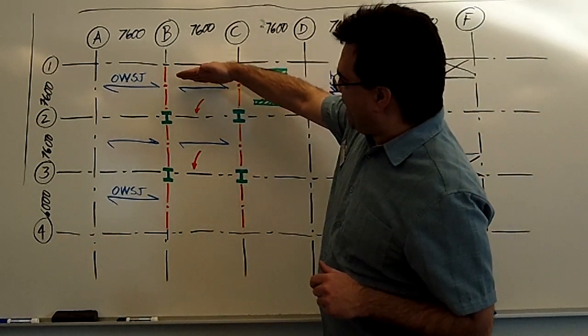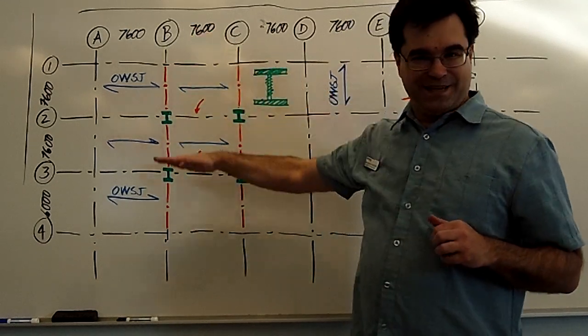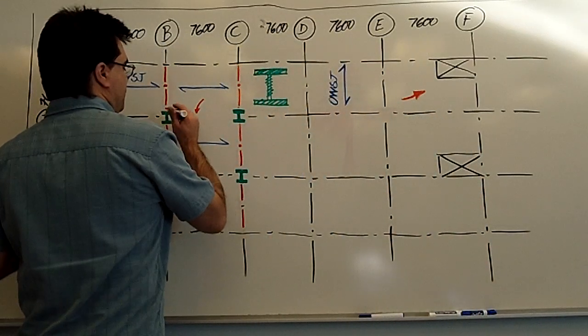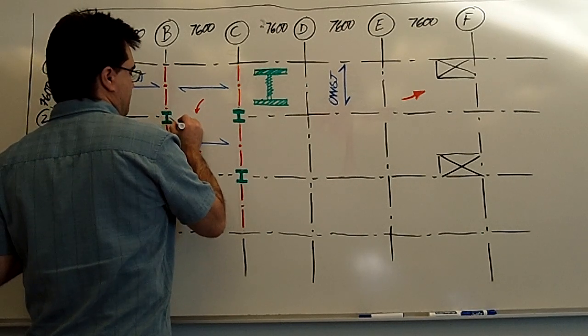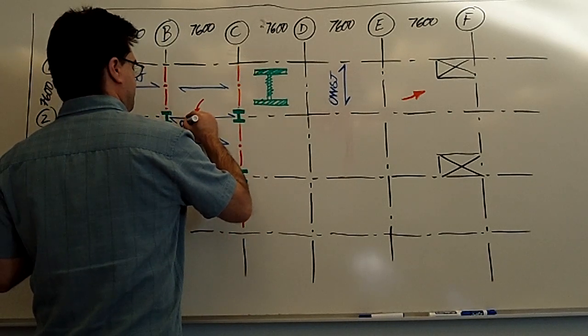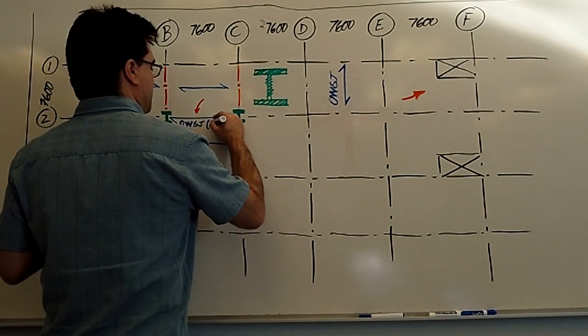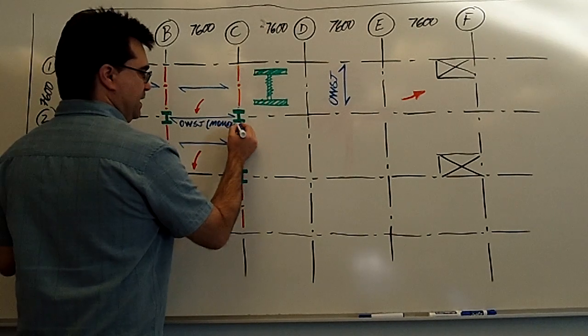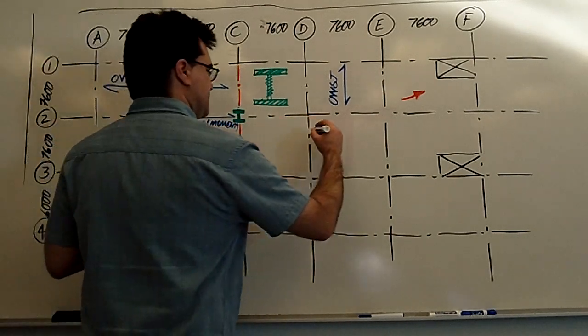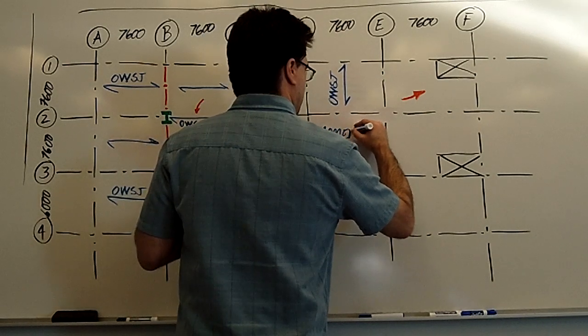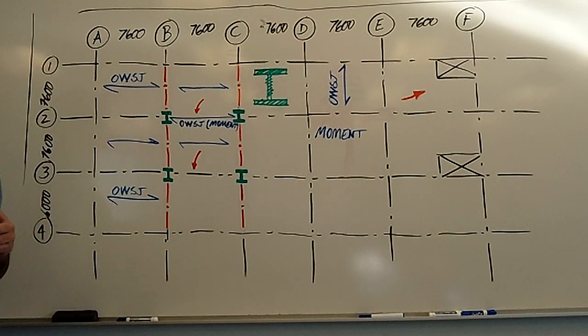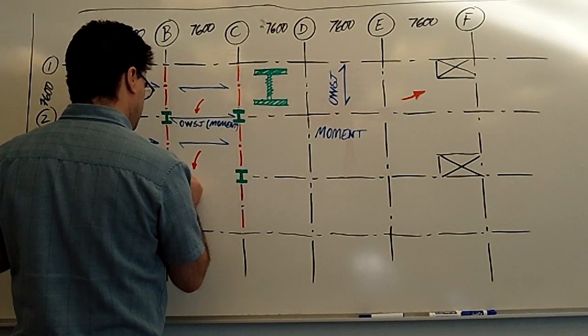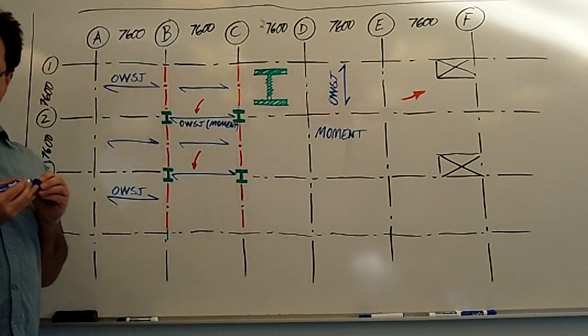Method one, as you're carrying the open web steel joist throughout, you can simply install at this location a very special open web steel joist. It's an open web steel joist that has a so-called moment connection. And by that, I mean moment, spelled as such. That's method one. And I'll show you in a moment what this special open web steel joist looks like. It is going from column to column, like this. That's method one.